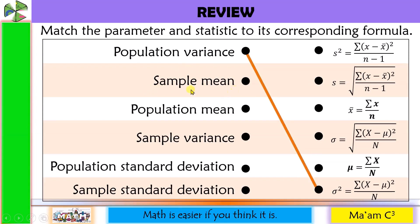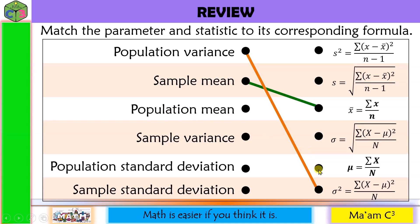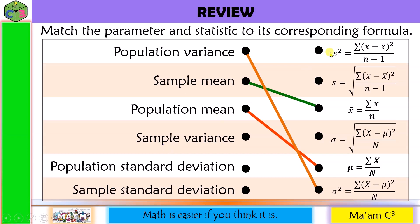Next one: sample mean. Since it is a sample, we are looking for a Roman letter. So this will be the answer. Next one: population mean — Greek letter, so here is the answer. Sample variance: variable raised to the second power and sample uses a Roman letter. So this is the answer.